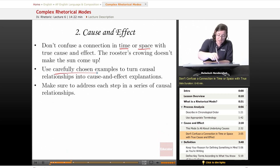Use carefully chosen examples to turn causal relationships into cause and effect explanations. Examples are what make this mode run. And finally, make sure to address each step in a series of causal relationships. You can't just show up at the school office and someone says why are you late and you say my cat can work a doorknob. It doesn't work. The secretary will be extremely confused, and you will not get an excused absence.